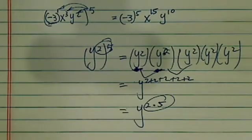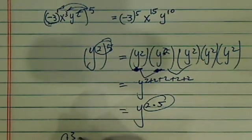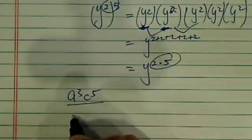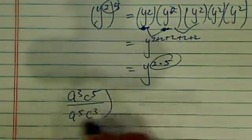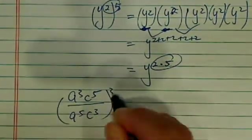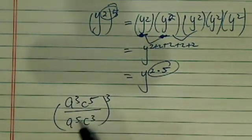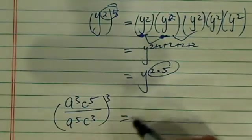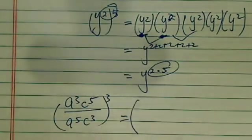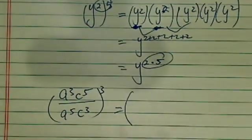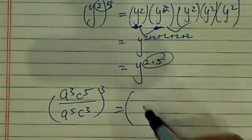Let's take a look at another one: a to the third times c to the fifth, divided by a to the fifth times c to the three, the whole thing to the third. Now if you're tempted to distribute it right away, don't, because it's going to get messier. What you can do is simplify everything inside first, much like in algebra where you do the parentheses first.